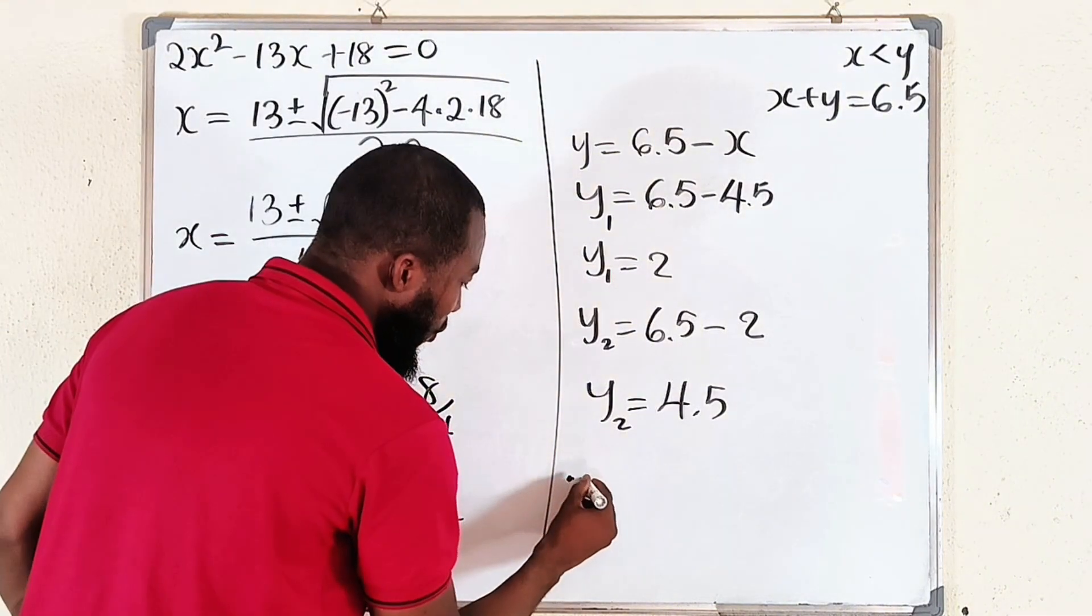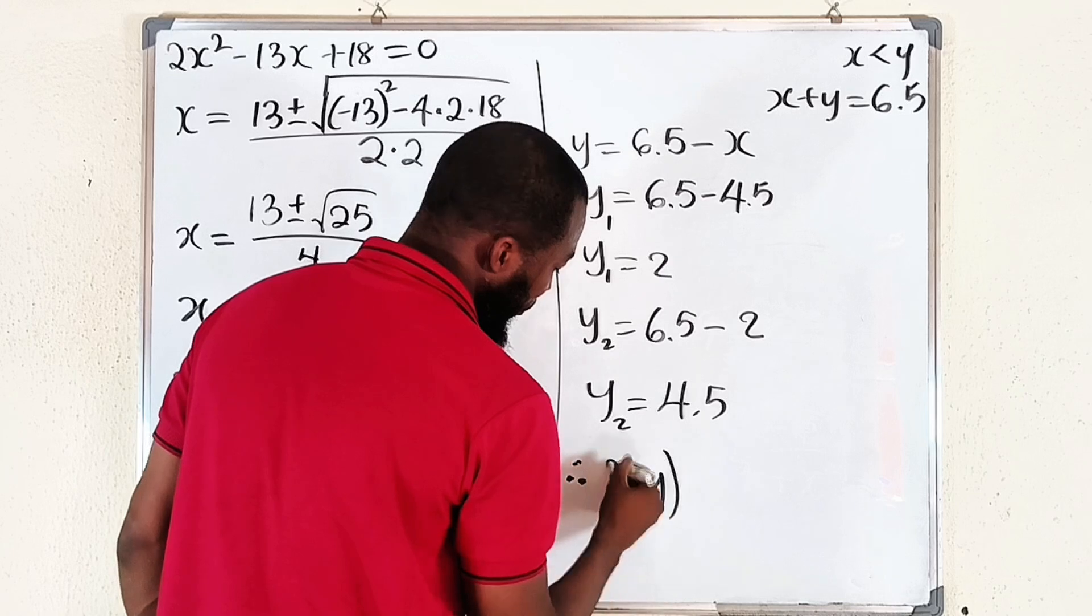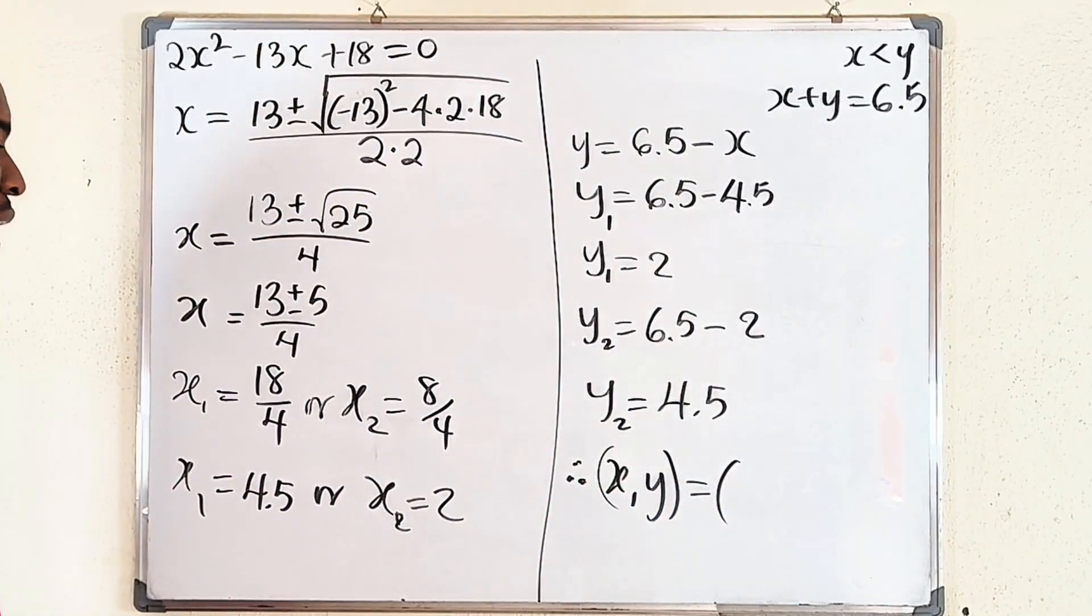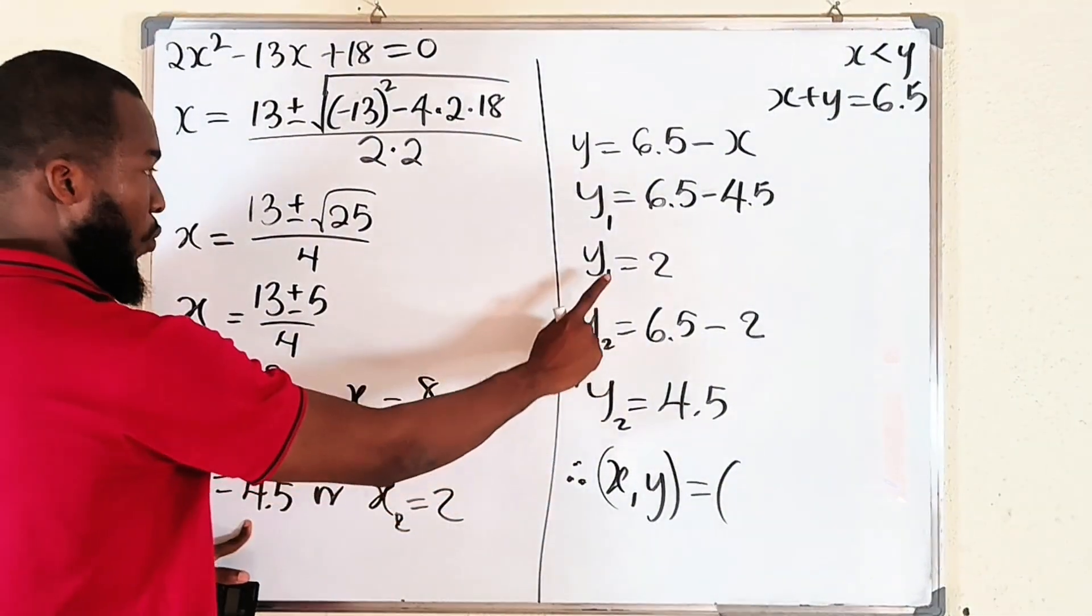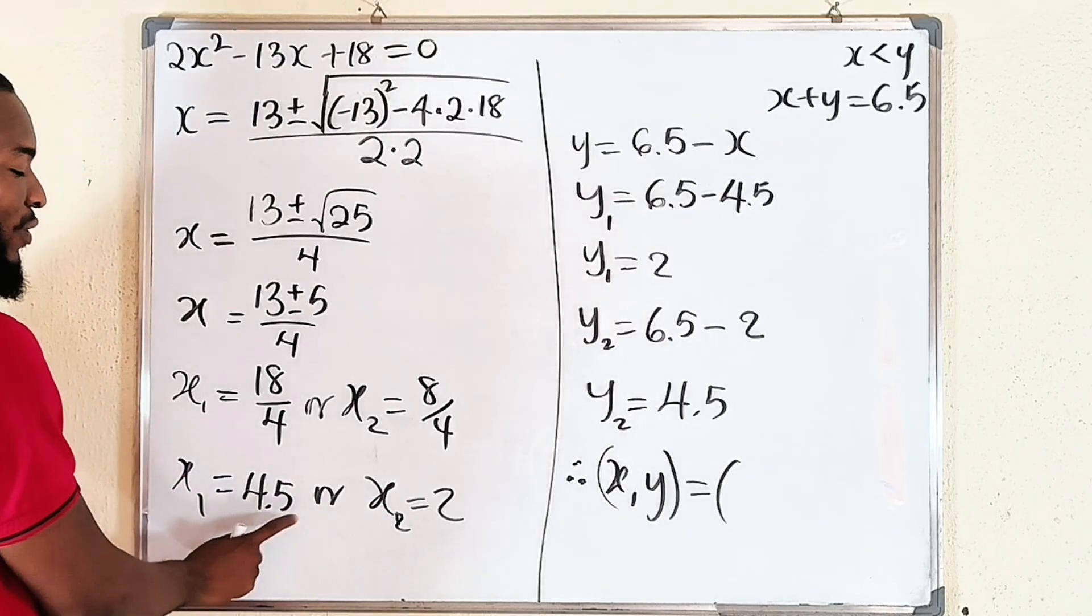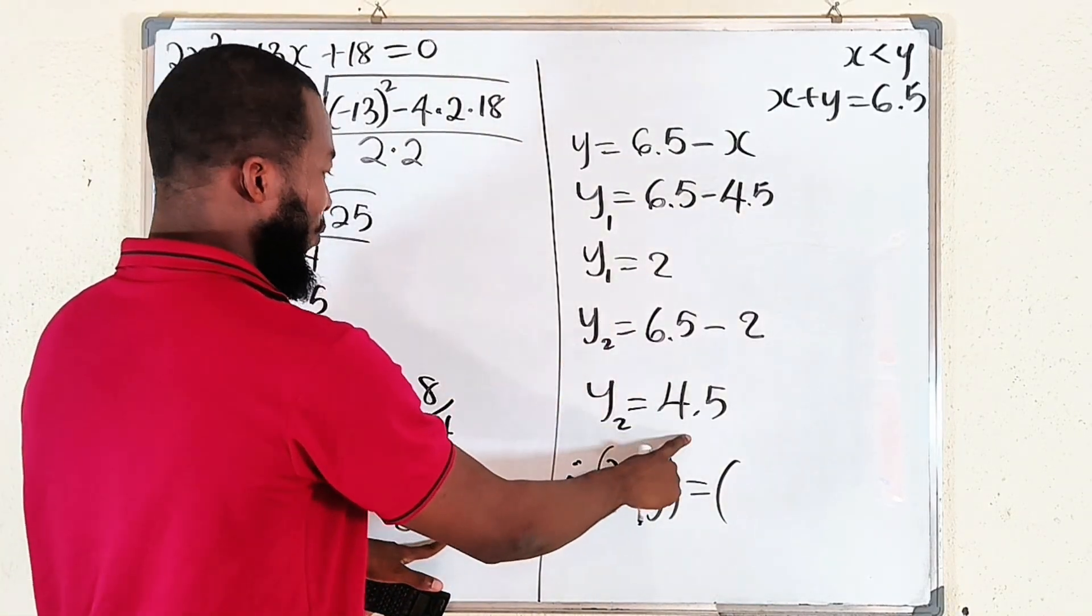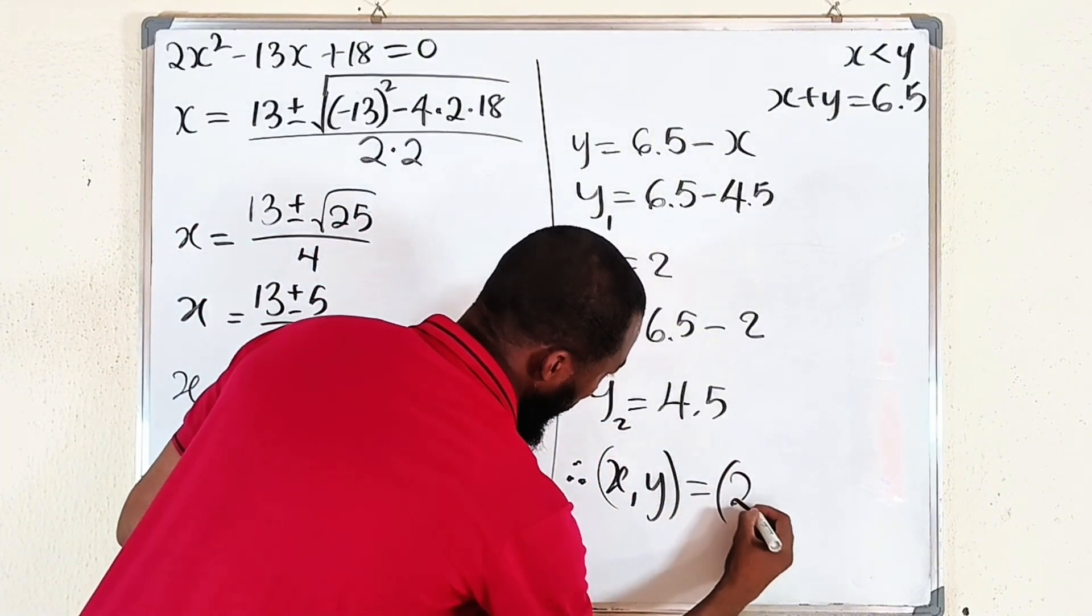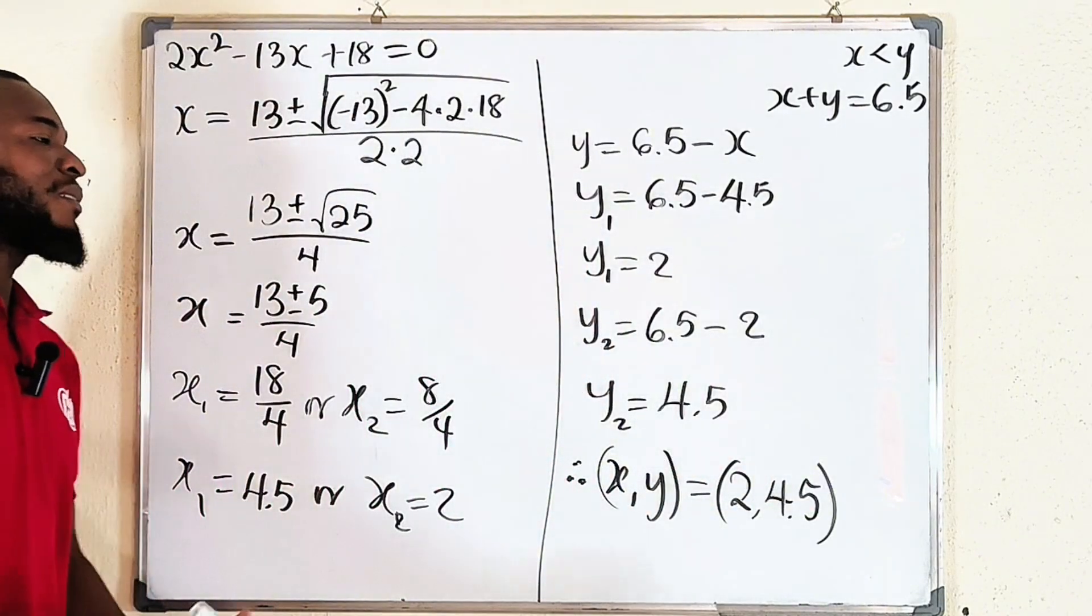But we have seen that X is smaller, Y is greater. So you can conclude that the values of X and Y are, we're going to take the smaller one for X in each combination. X1, Y1, which one is greater? This is greater, so we are not going to consider this. X2, Y2, Y is greater, so we're going to take this. So X is 2, Y is 4.5. As simple as that.